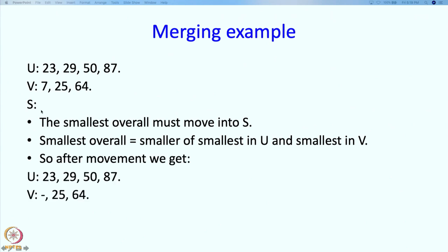So what we get after this is this picture. We started over here, we looked at the two elements which are respectively smaller in U and V, and we do not have to look at the rest of the elements to decide which is the smallest in this entire set. So we pick this 7 which is the smallest over here and we move it to S.